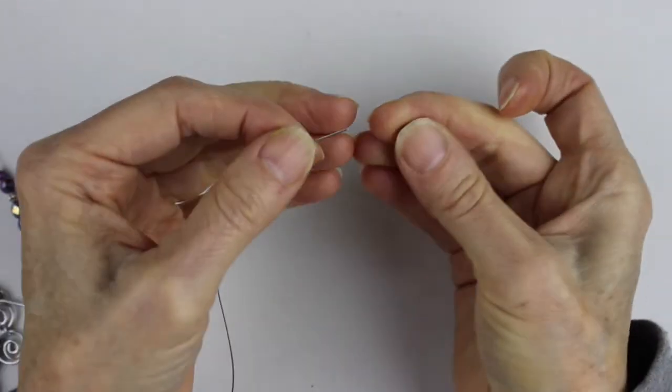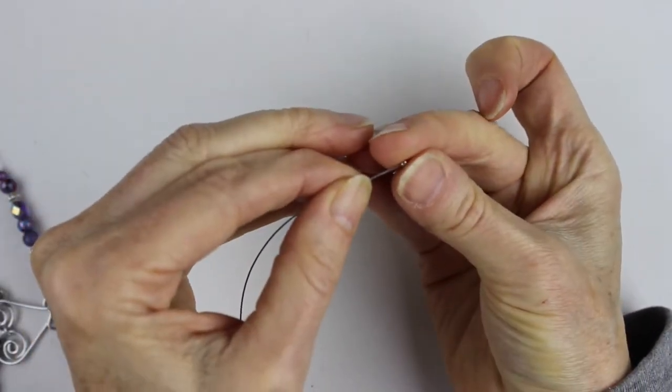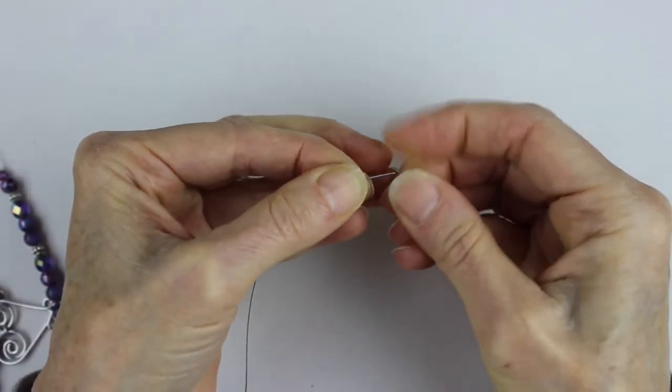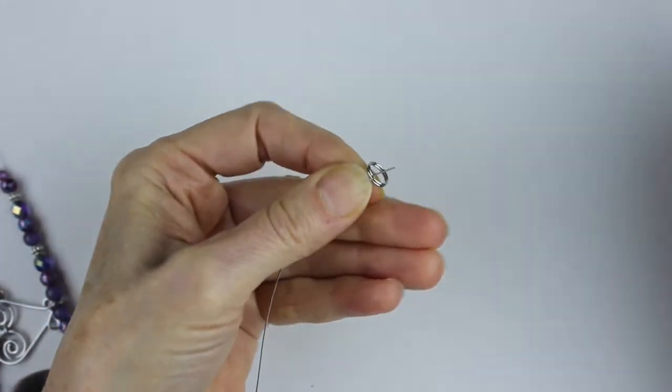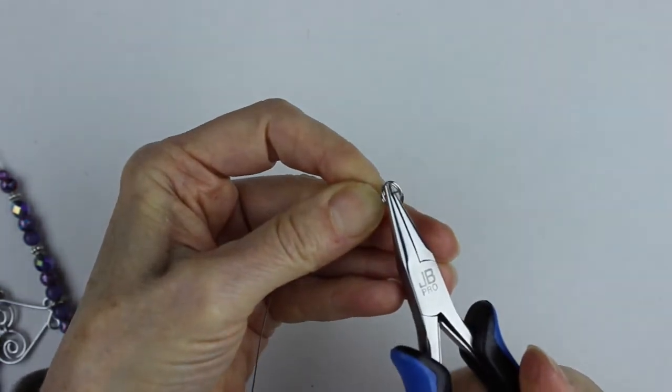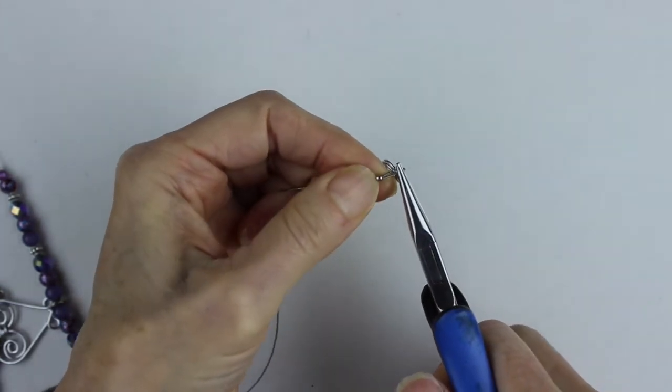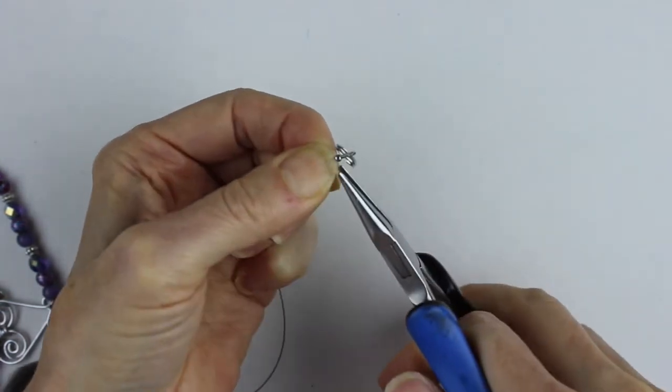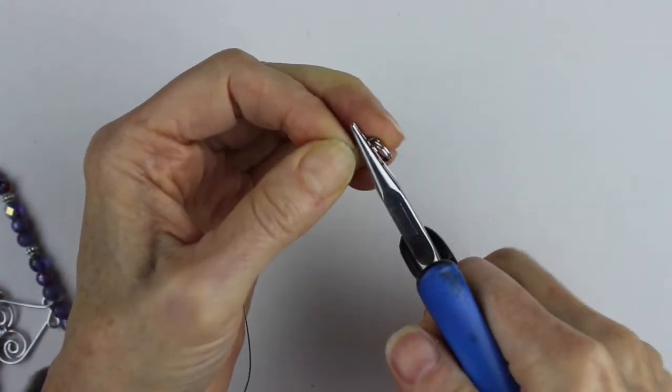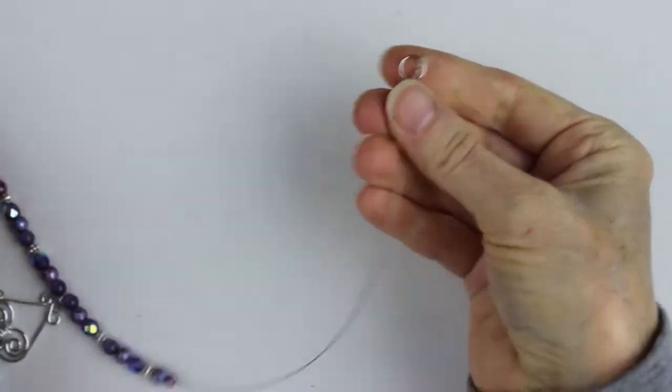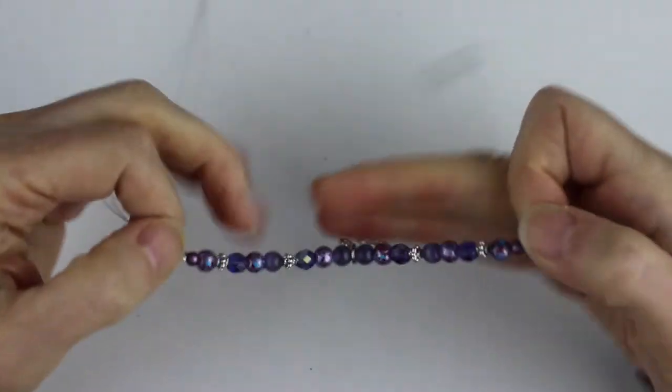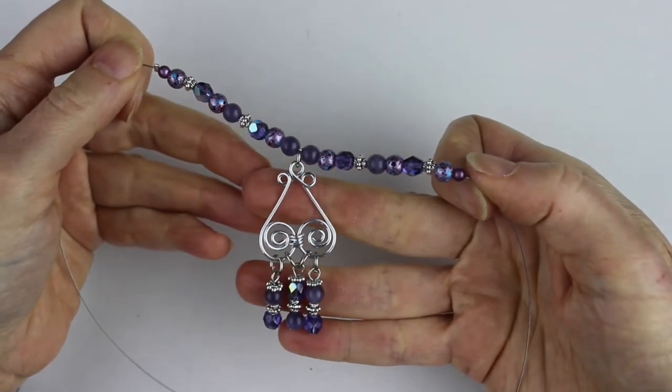Then we do the other side. So you put the crimp on there—this is just a split ring. I find it works really well with the lobster clasp and the split ring. We're going to put that back through the crimp. You could even put two crimps if you want it to be more secure. So you pinch it shut, and there you have your fancy chandelier necklace all ready to wear.